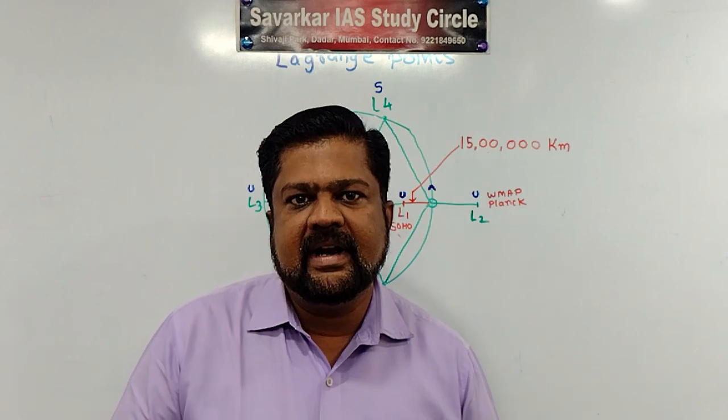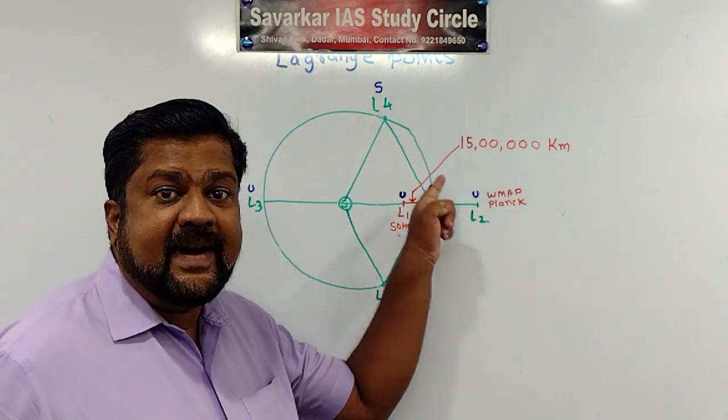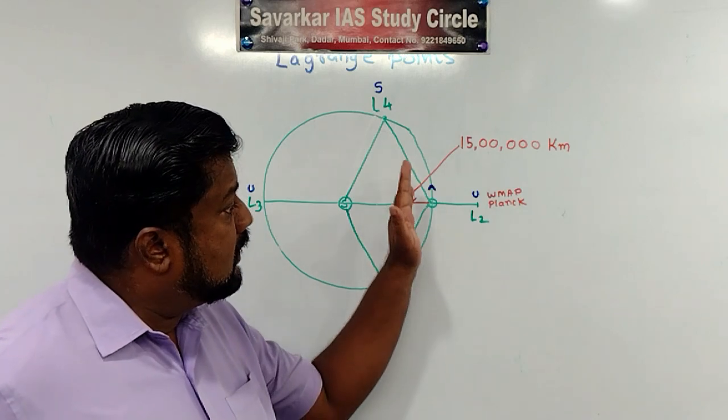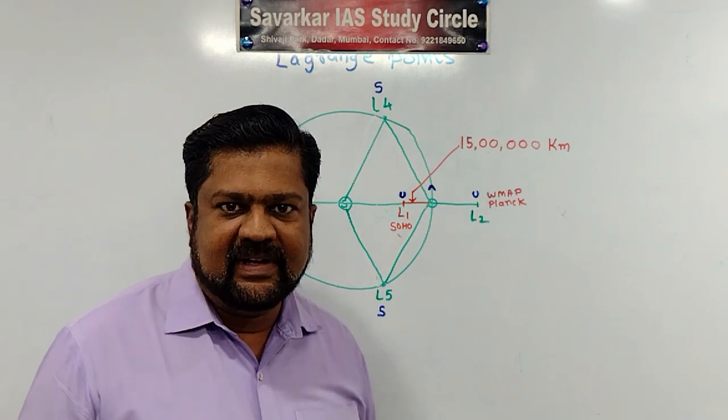Even geostationary satellite or geosynchronized satellite, then also it is orbiting around Earth in 24 hours. And therefore for half of the time or some part of time, it is not available.